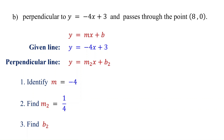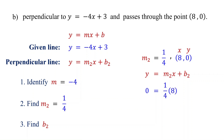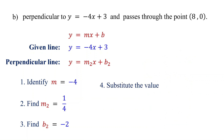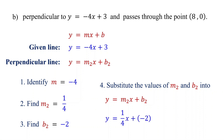Next, find the y-intercept of the perpendicular line using its slope and the given point. Substitute the values of m2, x, and y into y equals m2x plus b2. Replace y with 0, m2 with one-fourth, and x with 8. Now solve for b2. 8 divided by 4 is 2, and 1 times 2 is 2. Then subtract 2 from both sides to isolate b2. On the left, 0 minus 2 is negative 2. On the right, these cancel, leaving b2. Therefore, b2 equals negative 2. Finally, substitute the values of m2 and b2 back into y equals m2x plus b2. Replace m2 with one-fourth and b2 with negative 2. Remember, adding a negative is the same as subtracting a positive.